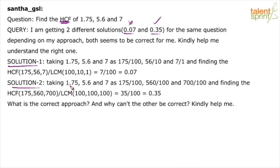In the second solution you have taken 1.75, 5.6, and 7 as 175 by 100, 560 by 100. Yes, this is the right approach. And you have got the answer as 35 by 100, you are saying 0.35. So, what is the correct approach and why can't the other be correct? Kindly help me.